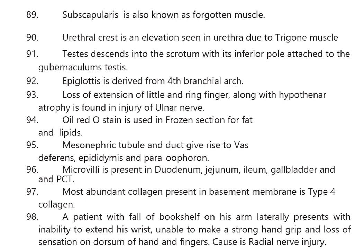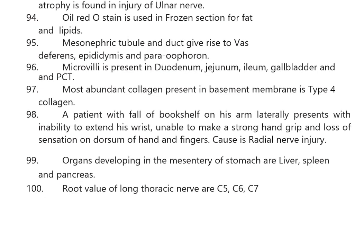A patient with a bookshelf falling on his arm laterally presents with inability to extend the wrist, inability to make a strong hand grip, and loss of sensation on the dorsum of the hand and fingers — this indicates radial nerve injury. Organs developing in the mesentery of the stomach are the liver, spleen, and pancreas.